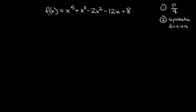So here we have f of x is equal to x to the fifth plus x cubed minus 2x squared minus 12x plus 8. The first thing I want to point out is look at the biggest exponent — it's a 5. So that means we're going to have five solutions. The biggest exponent in your polynomial tells you how many solutions you have to have.